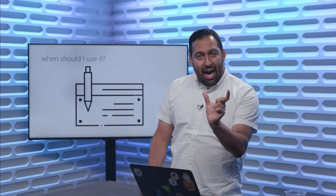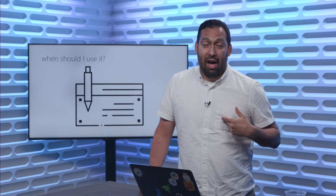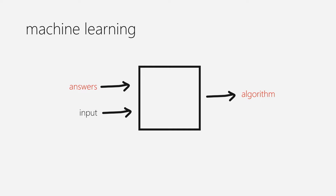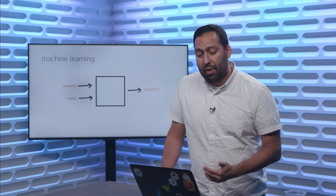The question I have is: is this difficult to program on my own, number one? And number two, do we have data or examples that will help us do that? With regular programming, you create an algorithm with some example input and out comes the answer. Machine learning swaps that around — instead of you creating a series of steps to solve the problem, you give it the answers and the input and it produces an algorithm. In machine learning parlance, the input is called the data and the algorithm is called the model.